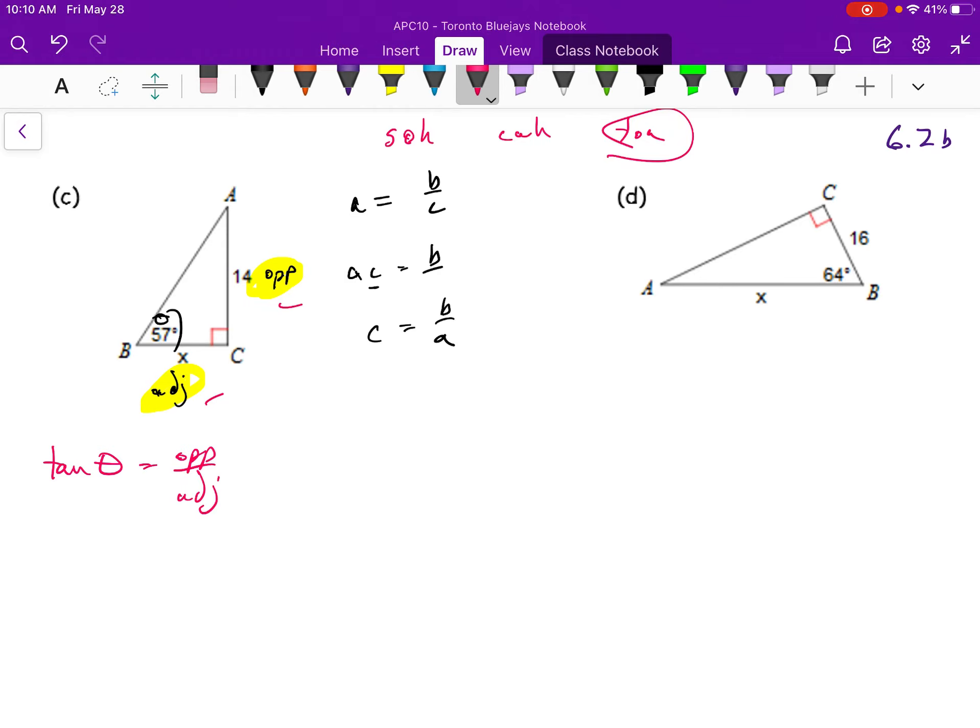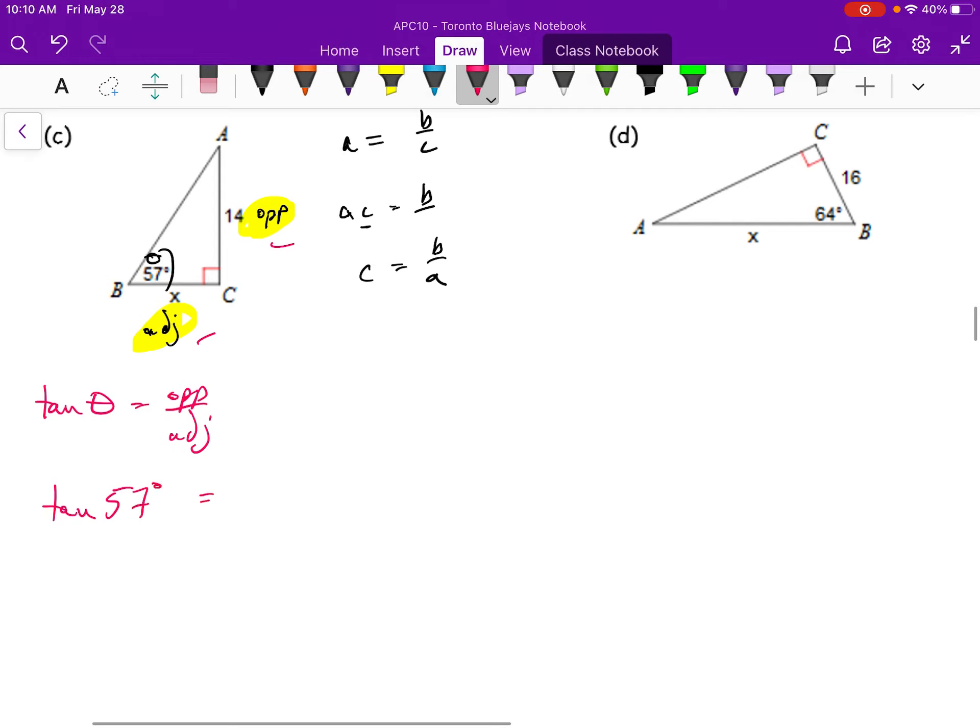And what happens here, we're going to plug in our information. So tangent of 57 degrees is equal to my opposite has a length of 14. My adjacent is what I'm trying to find.